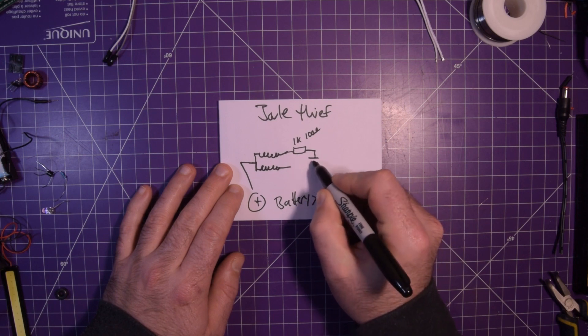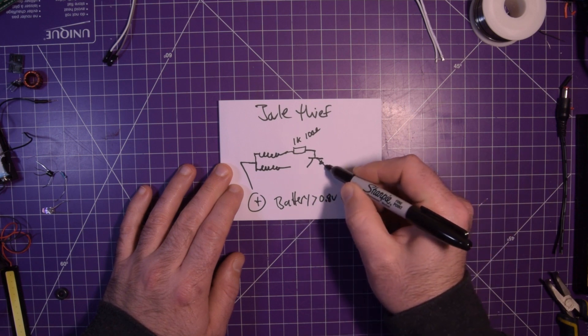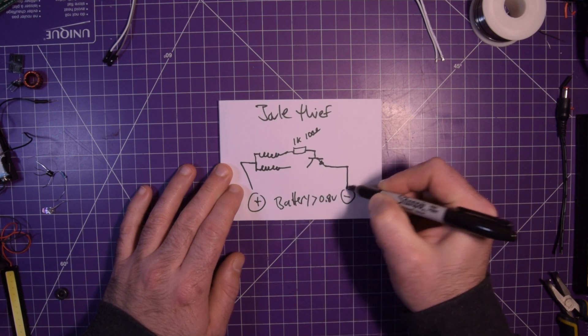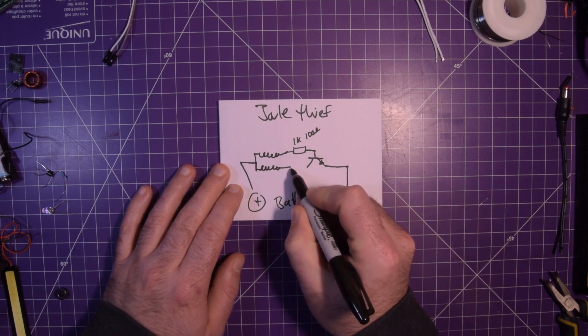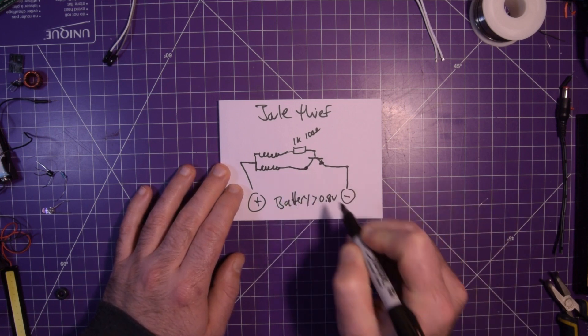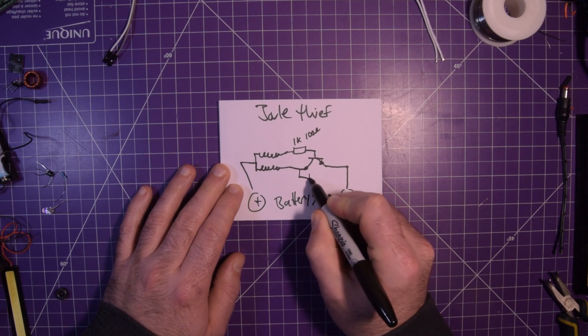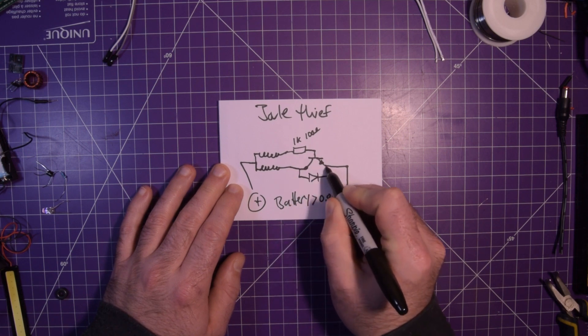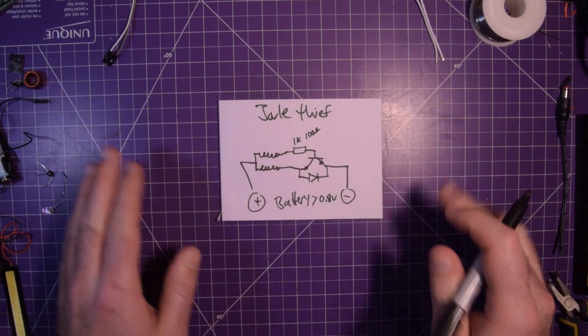Then the base of a standard NPN transistor, this can go along to the negative over here, and then this line here will connect right here on the collector of the transistor, and then our LED like that. And that is it, that's the entire circuit.